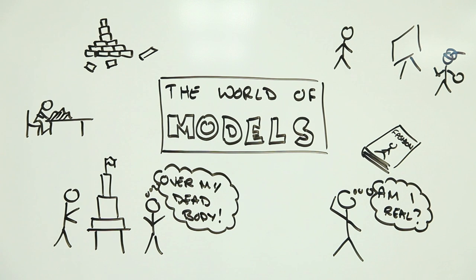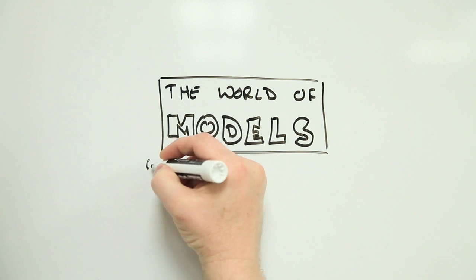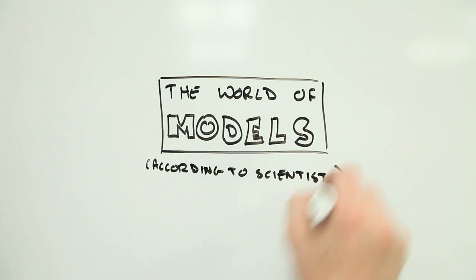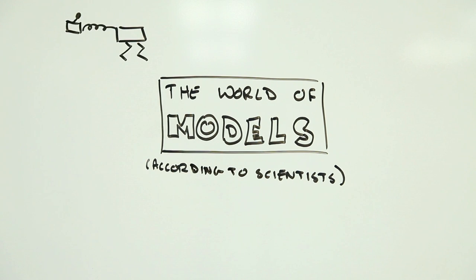And then you've got us scientists. We use the word model in so many different ways that we occasionally get ourselves tied up in linguistic knots. To some scientists, a model is a Heath Robinson lash-up that demonstrates some process, the mechanics of walking perhaps.